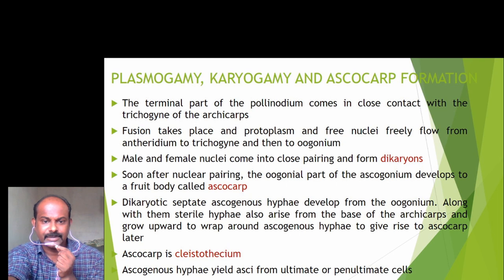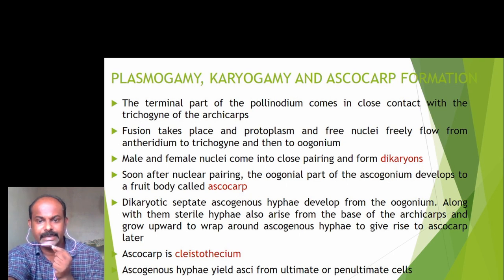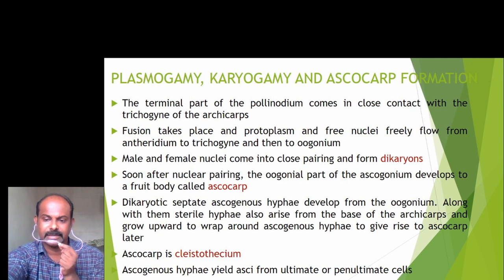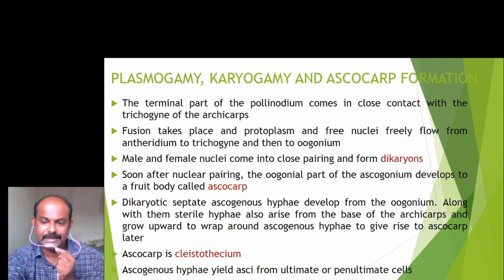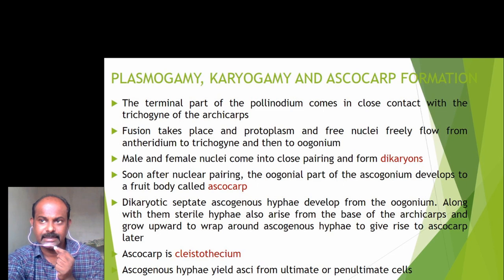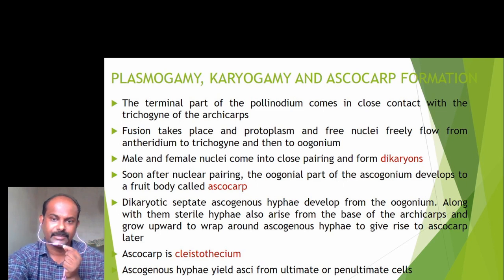The ascogenous hyphae yield asci from ultimate or penultimate cells, meaning the terminal or subterminal cell. The development of the ascus has already been discussed during the general characters of subdivision Ascomycotina.